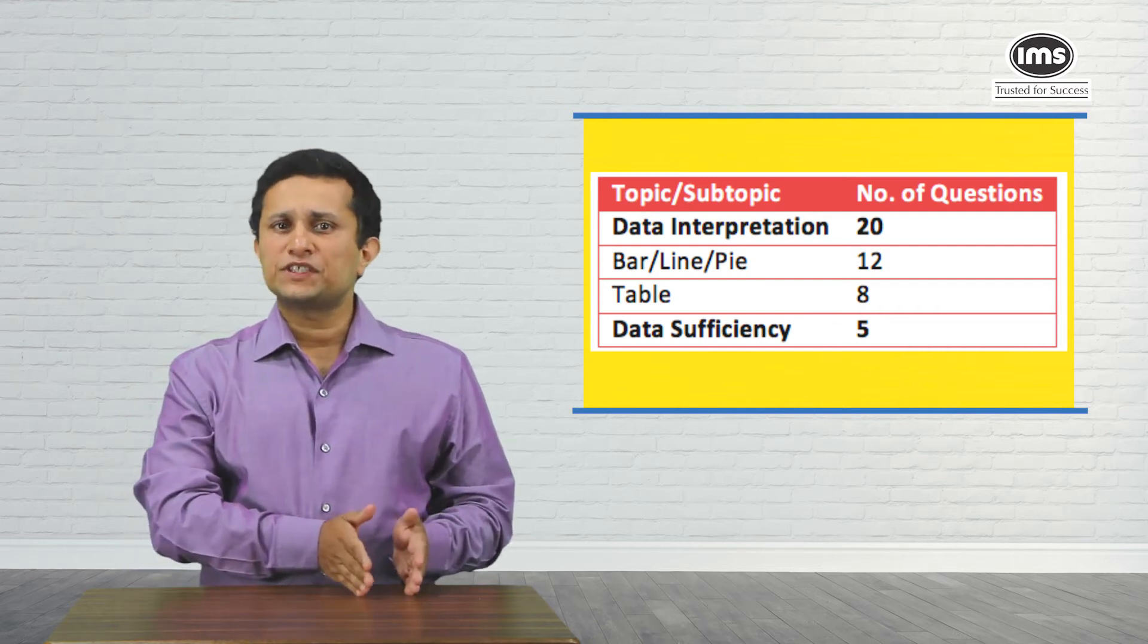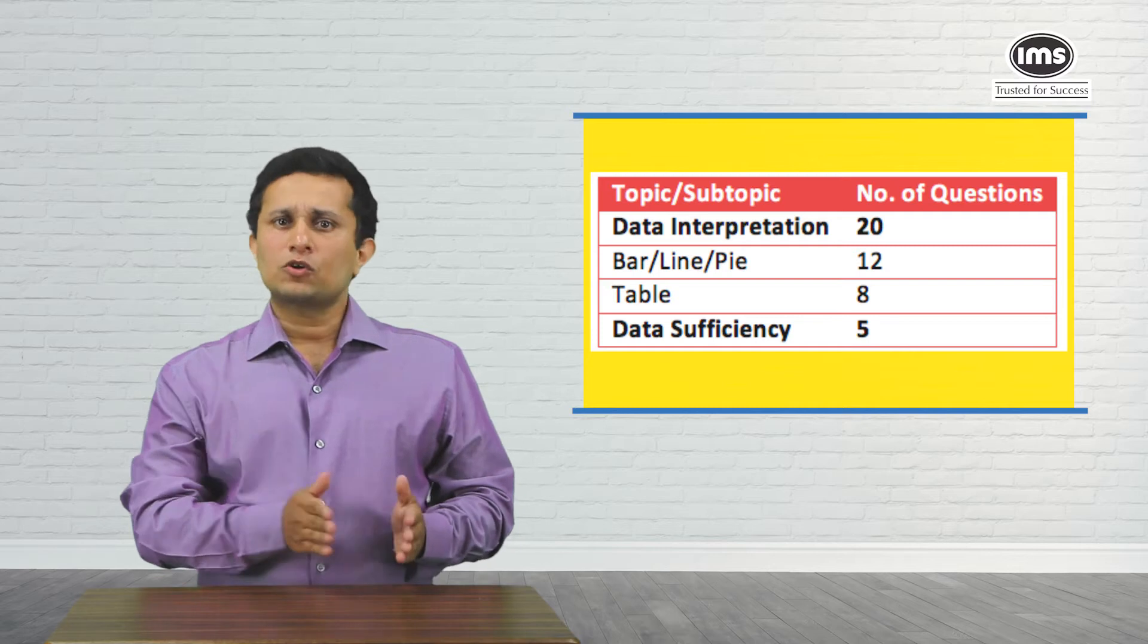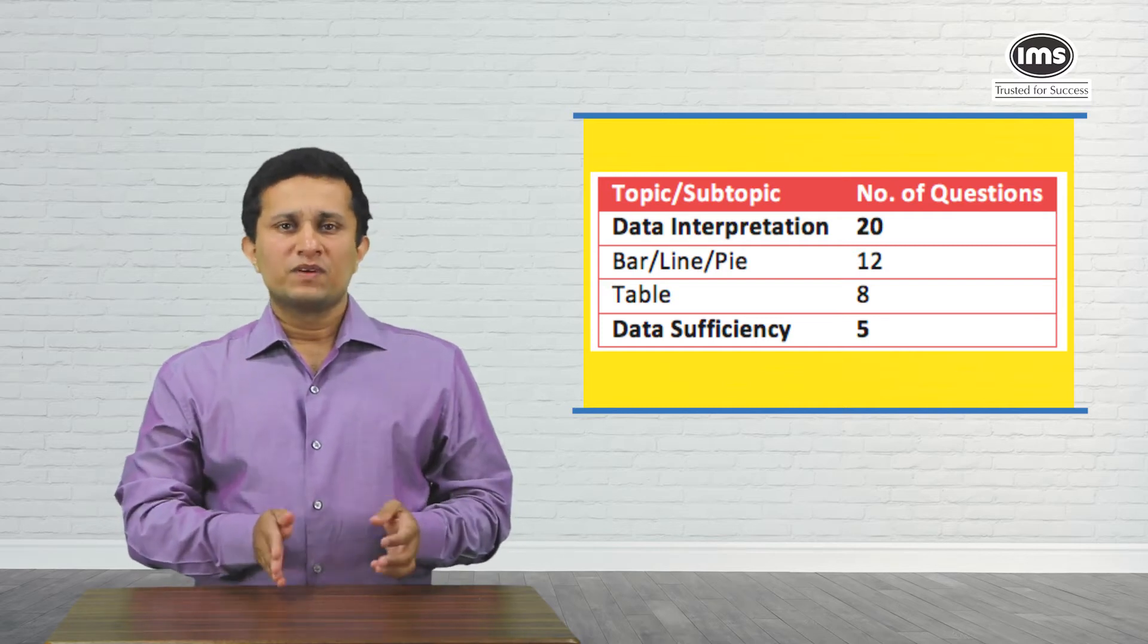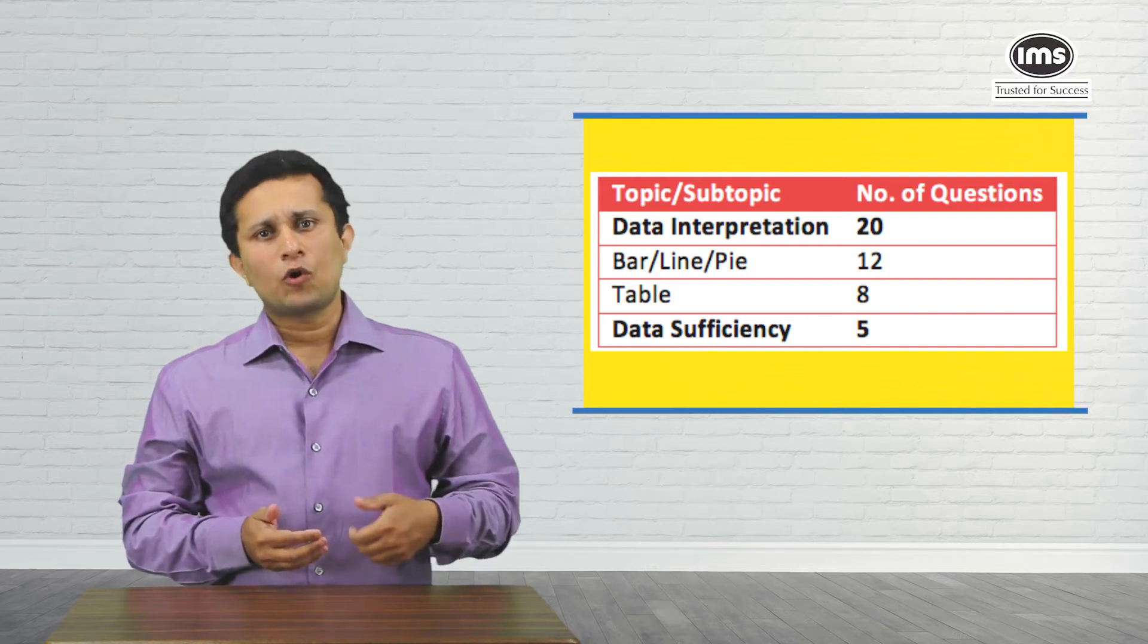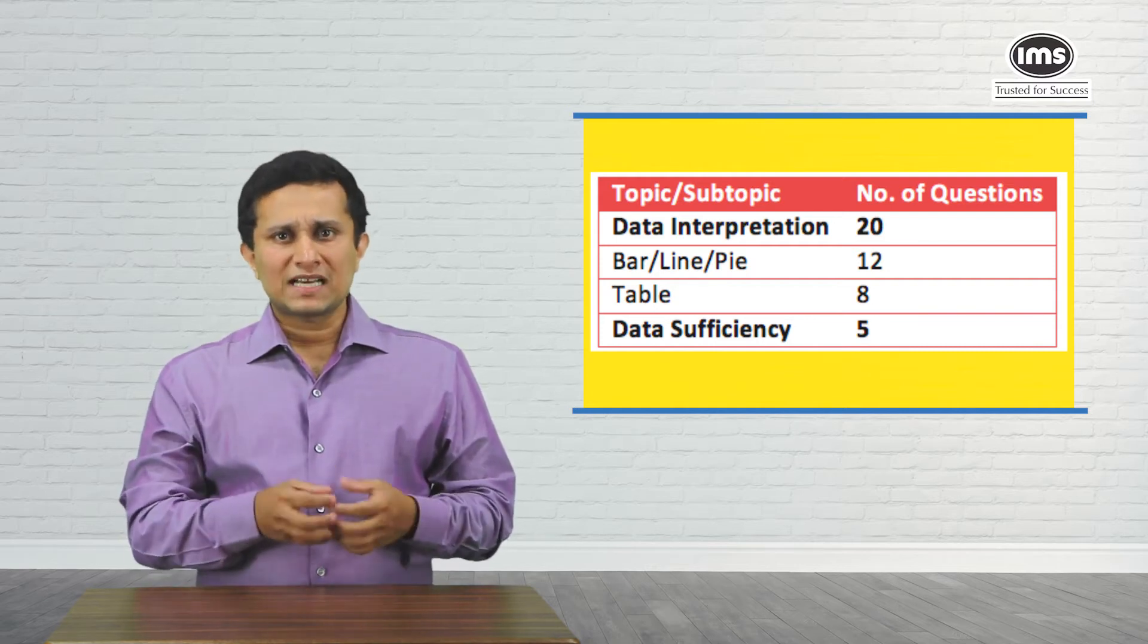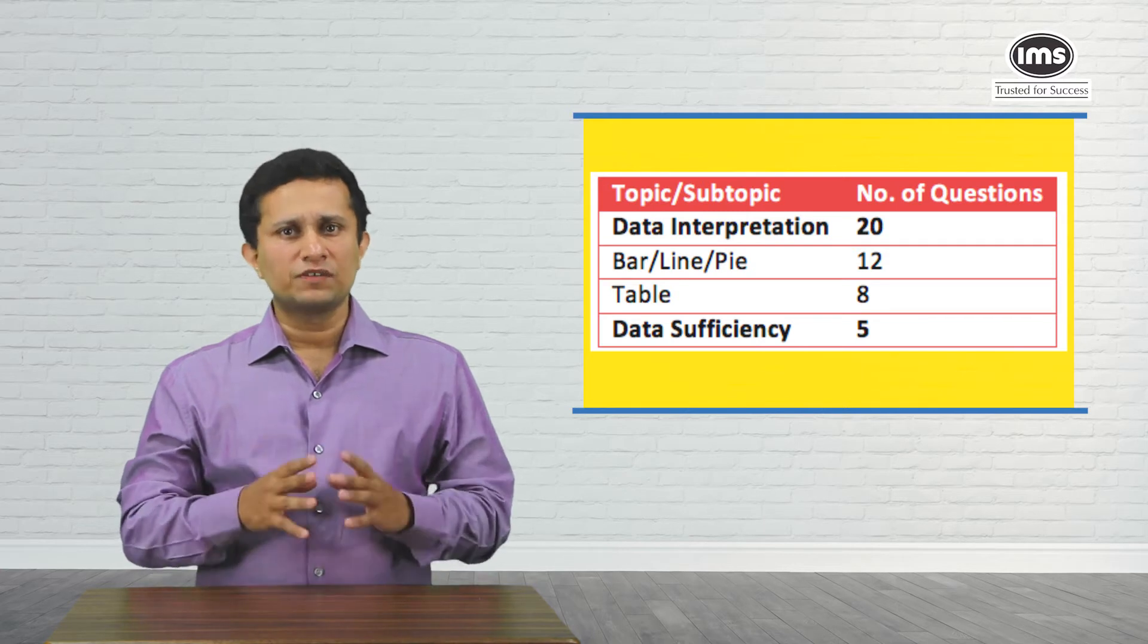Coming to data sufficiency, again across slots, it has been reported that the questions on data sufficiency have veered towards being on divisibility and odd-even numbers. This has been a trend reported exclusively for this year.